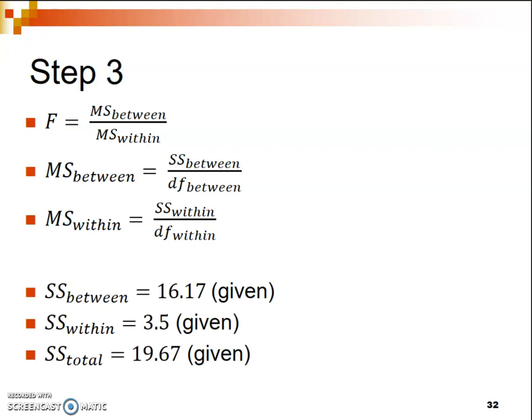The sum of squares between is 16.17. The sum of squares within is 3.5. The sum of squares total, which we will use in a later step, is 19.67. You should also notice that sum of squares between plus sum of squares within should equal sum of squares total — that's a good way to double check, and indeed they do add up.